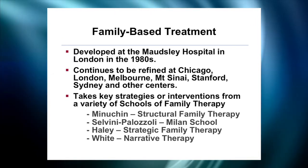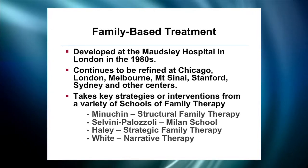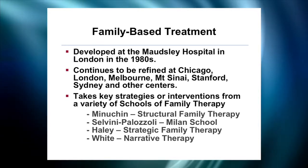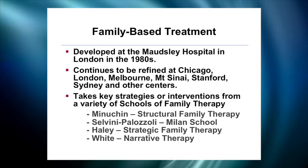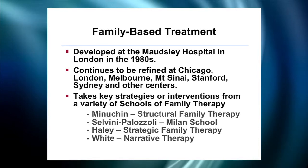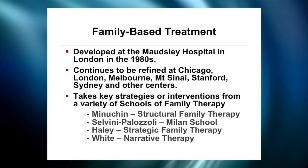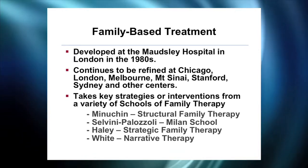FBT takes a couple of key strategies for interventions from a variety of schools of family therapy. Minuchin's structural family therapy is probably the easiest to identify in FBT, but certainly Selvini Palazzoli's work from the Milan School, Haley's Strategic Family Therapy, and most definitely Michael White's Narrative Therapy would be clearly on display in this work. It's very much a combination of what is practical, what is appropriate, and what will get the family from A to B, rather than a strict adherence to any one particular school of thought.